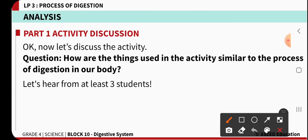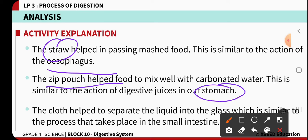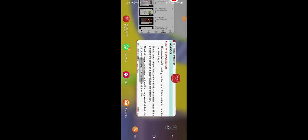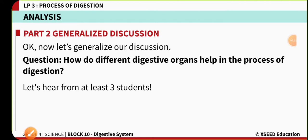The things used in this activity are similar to the process of digestion. A straw is helpful to send the mashed food material through it — acting like the esophagus. The zip pouch is acting like the stomach. The cloth, which absorbs, acts like the small intestine of our body.